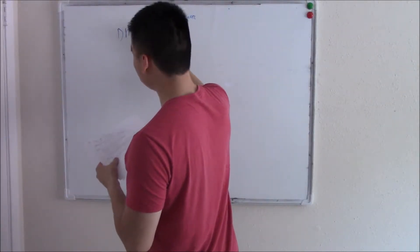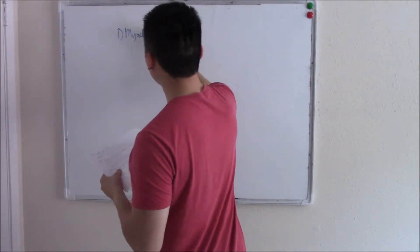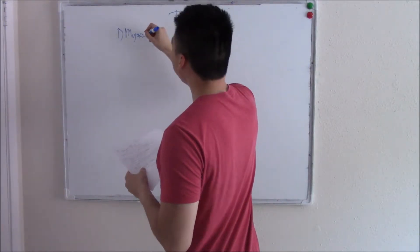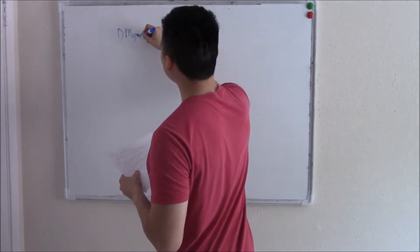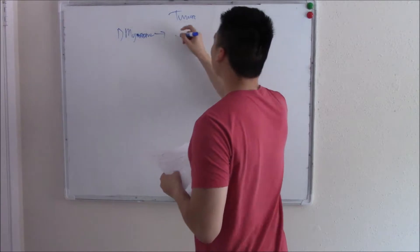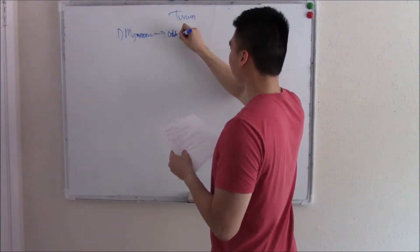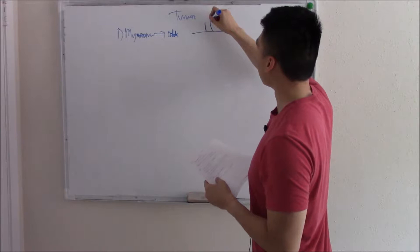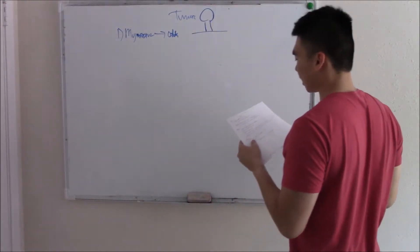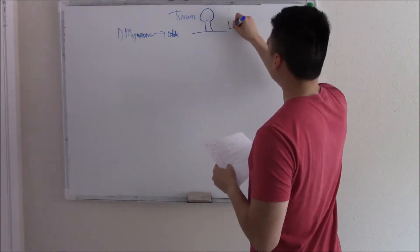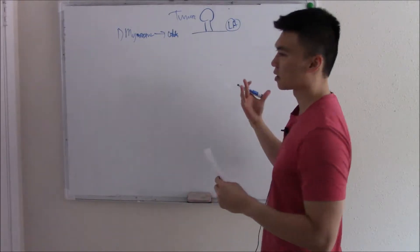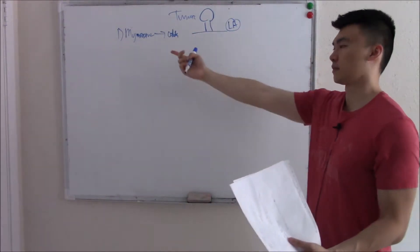So the first one that's seen in adults is called the myxoma. How do you spell it? Myxoma. So this is seen in adults. And it creates this little pedunculated mass, pedunculated mass, often in your left atrium. So if you see a little pedunculated mass in your left atrium, myxoma. Easy peasy.